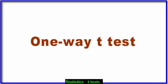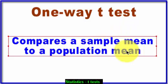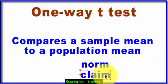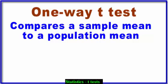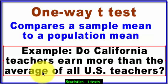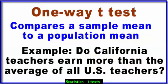Let's go to the one-way t-test, also called the one-sample t-test — self-explanatory, there's only one sample. What it does is compare a single sample mean to a population mean. Other words for population mean are a norm or a claim. Here's an example: do California teachers earn more than the average of all U.S. teachers? California is the sample and all U.S. teachers are the population. You're comparing a sample mean to a stated mean, and since the word 'more' is in there, this is a one-tailed test of significance.